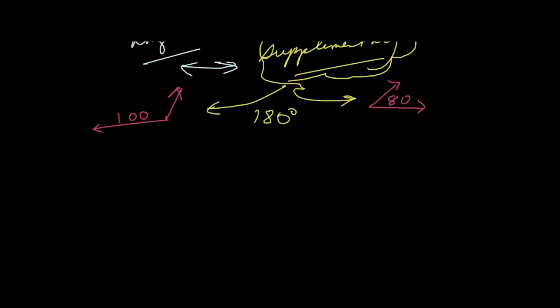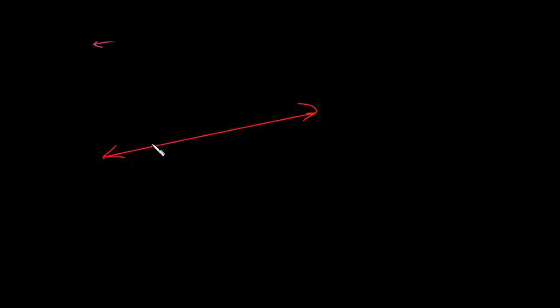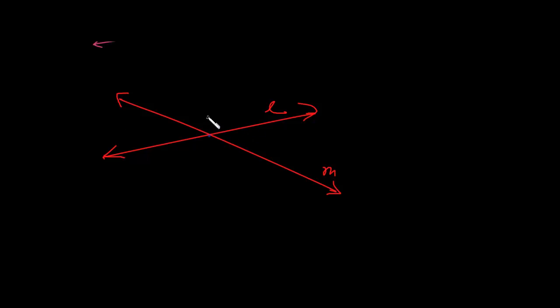Let's take a look at some more linear pairs, and the ones we're going to look at today have to do with two lines. We have two lines — line L here and another line M. These two lines intersect, and you'll notice there's a point of intersection. We'll call that point P. So we have point P at the point of intersection, and line L and M intersect at point P.